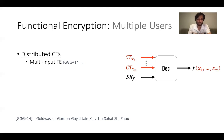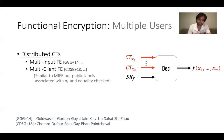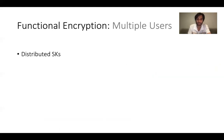Recently, MIFE was further generalized to multi-client function encryption, where inputs x1 through xn also contain public labels. The computation only succeeds when the public labels for all input ciphertexts match. There has also been much progress in the domain of distributing secret keys, mostly from the perspective of either key escrow or adding extra functionality.